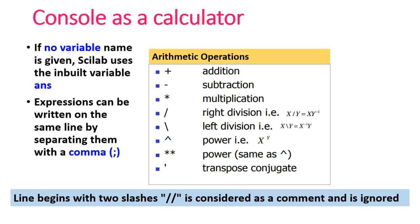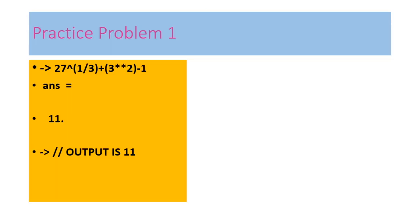To add a comment in Scilab, use double slash (//). Any text after // is treated as a comment and will not be executed. As a practice problem, you can type: 27^(1/3) + 3*3^2 - 1, combining multiple arithmetic operations in a single expression. Since no variable is assigned, the result will be stored in ans. You can add a comment using // to annotate your answer.